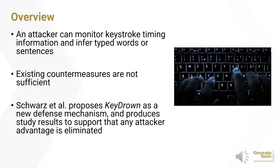The outline of this presentation will aim to present concepts in the same order as written in the paper. The authors begin by describing the dangers and effectiveness associated with keystroke timing attacks, and show how such attacks can expose sensitive user information. Following up, they explain why the current existing countermeasures in this space are not sufficient. And finally, they propose their solution in the form of KeyDrown, which is available as an x86 Debian package. They support their implementation with solid results that show that any attacker advantage is nullified by their program.